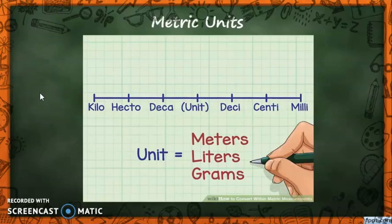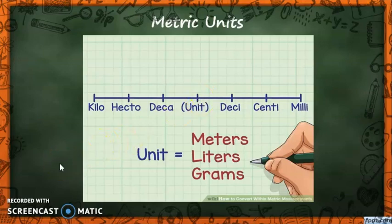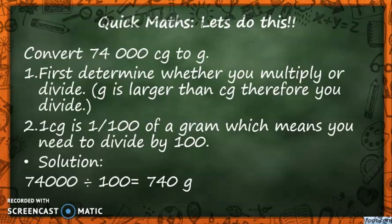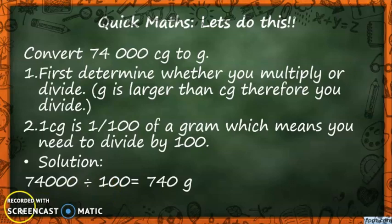Moving from centigram to gram on the metric line, we divide by 10 each time — divide by 10, divide by 10 — which means we divide by 100. So yes, we are on the right track. Solution: 74,000 divided by 100 equals 740 grams.